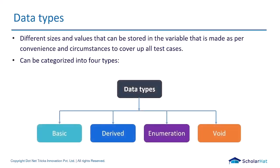Data types can be categorized into four types. First is the basic data type, also called primitive data type. Then we have derived data types. Then user-defined data types — enumeration, structure, and union all come under user-defined data types.